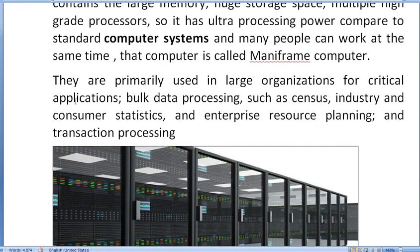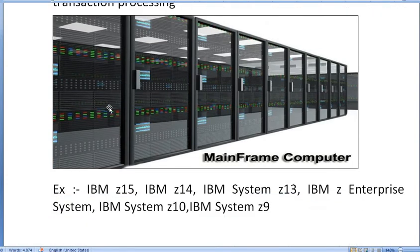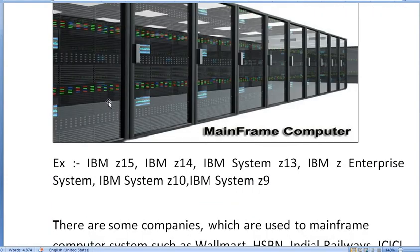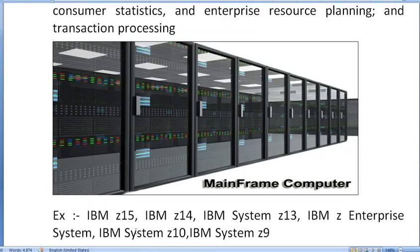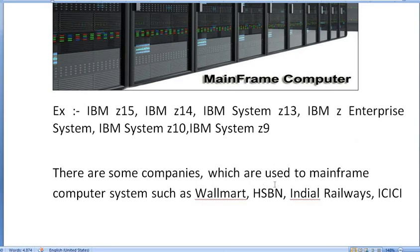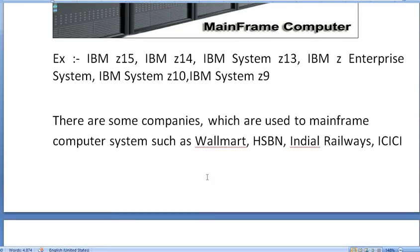Examples of Mainframe Computers include IBM Z15, IBM Z14, IBM System Z13, IBM Z Enterprise System, IBM System Z10, and IBM System Z9. Companies that use Mainframe Computer systems include Walmart, HSBC, IRCTC — Indian Railway — Postal Bank, ICICI Bank, and HDFC Bank.